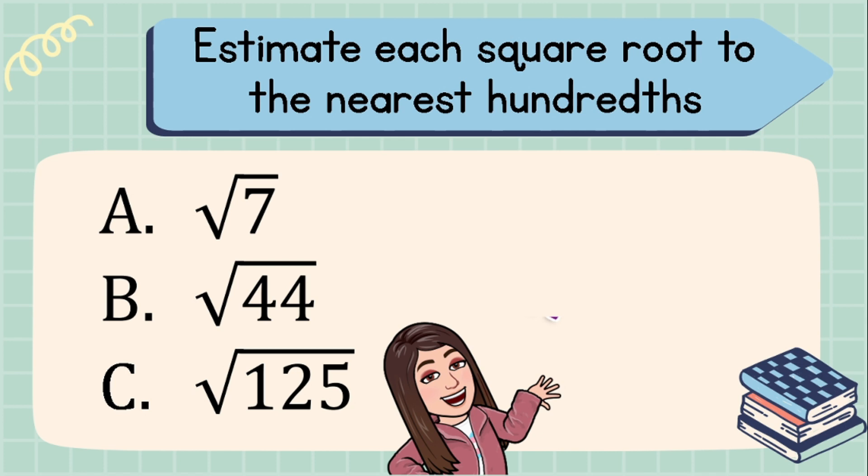Obviously these examples are not perfect squares, thus their principal roots are irrational numbers. When we say irrational numbers, we are talking about non-terminating and non-repeating decimals. With that, we will find the estimated value of their principal roots using a series of estimation, estimating each square root or principal root up to the nearest hundredths.